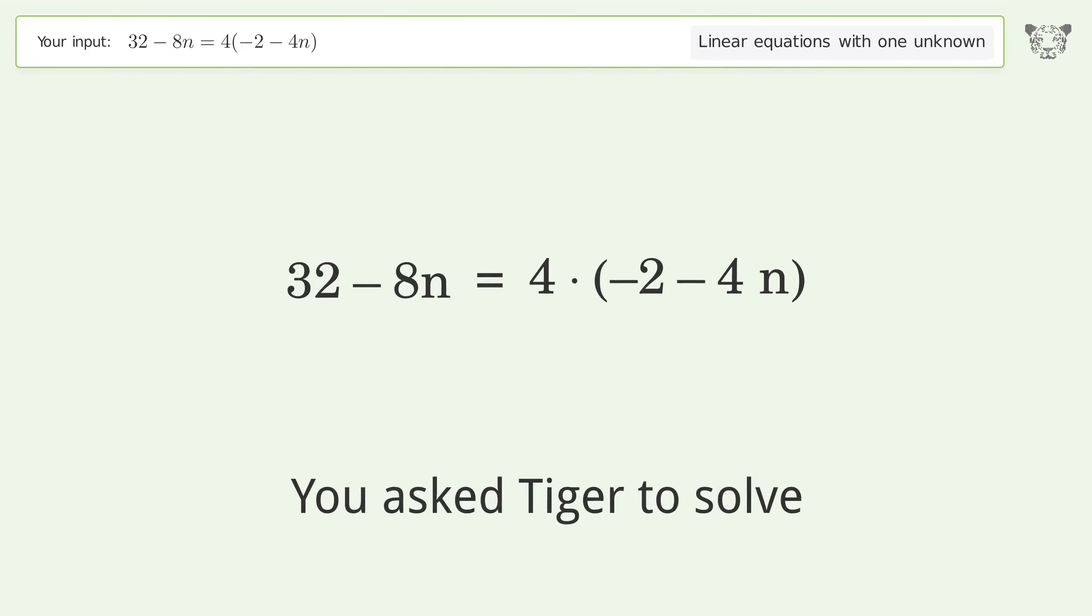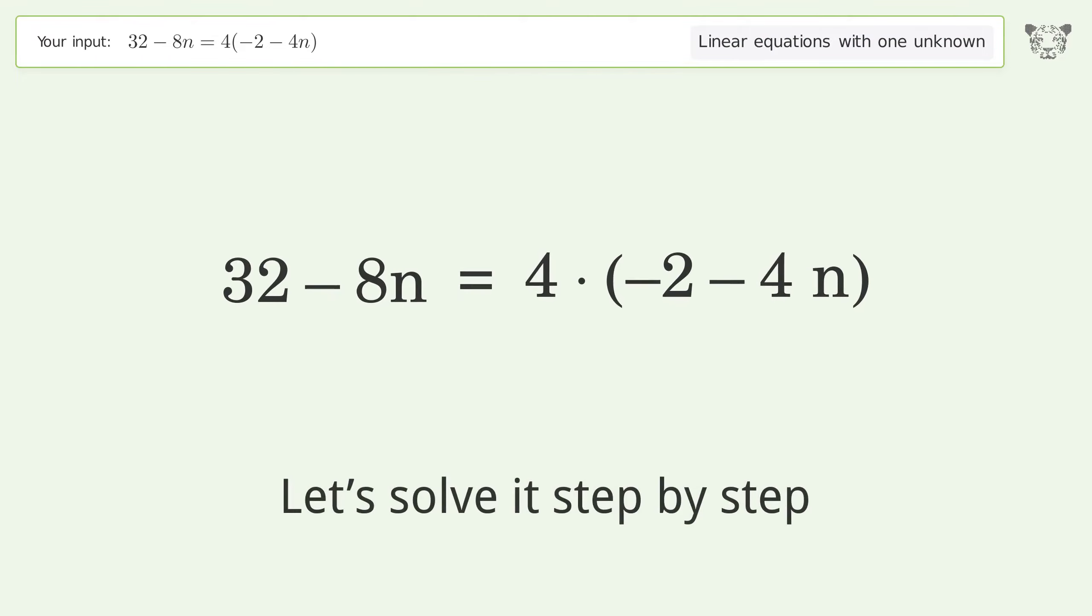You asked Tiger to solve this, which deals with linear equations with one unknown. The final result is n equals negative 5. Let's solve it step by step and simplify the expression.